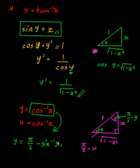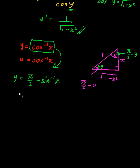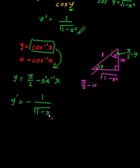Once you have that, differentiation becomes easy. Pi over two differentiates to zero, so y-dash is going to be minus one over the square root of one minus x squared. Thanks to the sine inverse result, we can just borrow that and apply the negative sign.